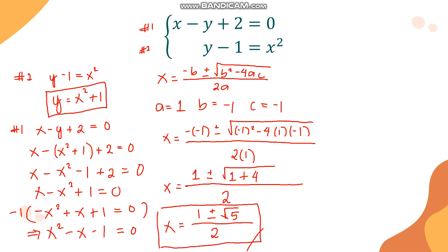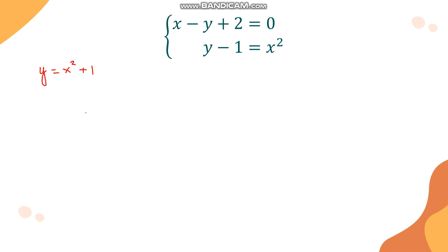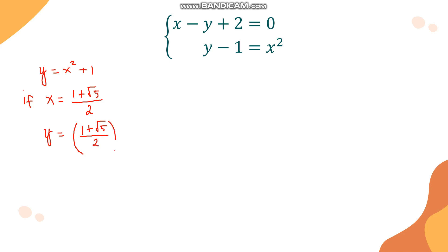Now we substitute each value of x into y equals x squared plus 1 to find the corresponding y-values. For x equals (1 plus √5)/2: y equals ((1 plus √5)/2) squared plus 1. Squaring the fraction means squaring the numerator and denominator: (1 plus √5) squared over 4, plus 1.